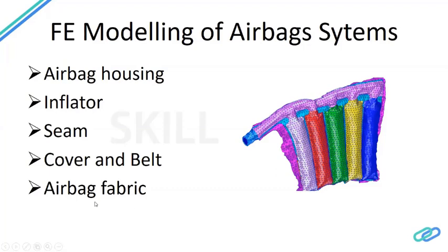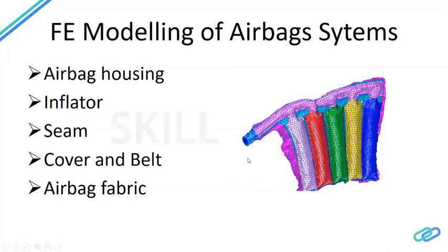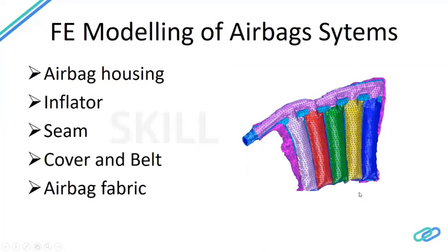The airbag fabric is the most important element of the airbag. A typical fabric has two threads running in opposite directions, making it an orthotropic material — with different loading and unloading properties in each direction. The material properties provided for the airbag must be defined in two different directions. One test used to generate these properties is the picture frame test, where the fabric is stretched and load-versus-displacement data is gathered in both directions to use as material input.